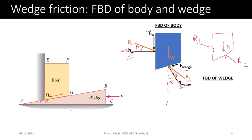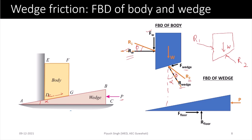Now let us isolate the wedge. A horizontal force T is acting on it. There will be a reaction from the floor R_floor. The tendency of the wedge is to move from right to left, from C to A, so the frictional force will act from A to C. The resultant of the floor normal reaction and friction can be represented by R4, where R4 makes an angle phi with the vertical.